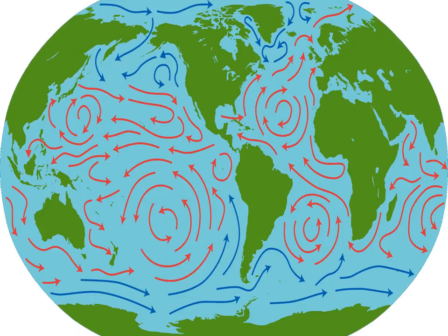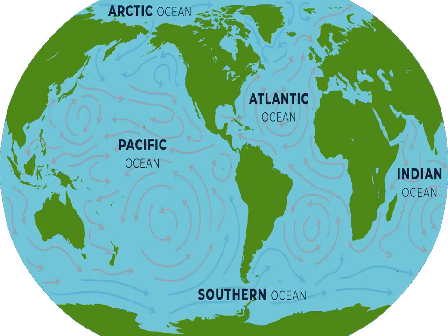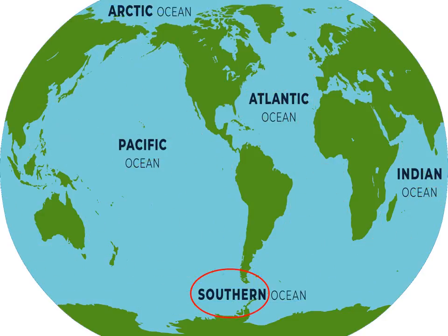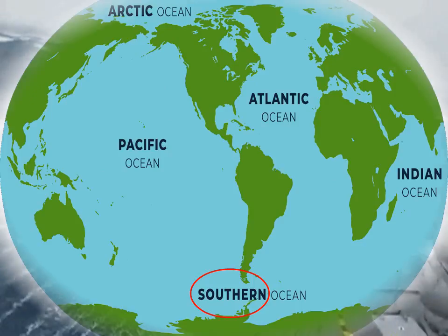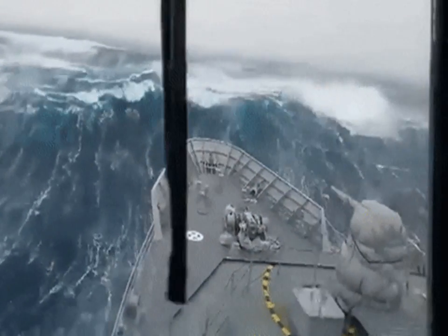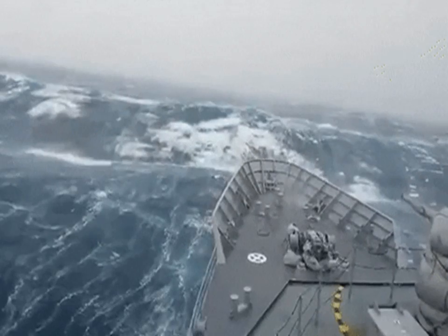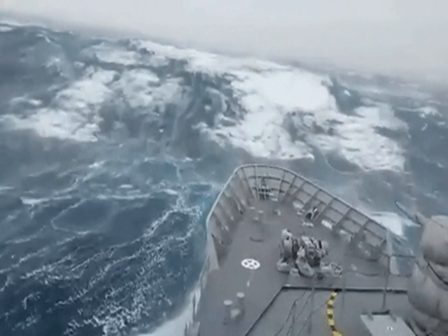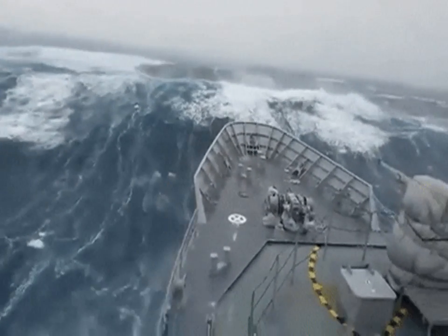Next comes the Southern Ocean or Antarctic Ocean. The Southern Ocean is the second smallest ocean in the world. The Southern Ocean comprises of the southern portions of the Pacific, Atlantic and Indian Oceans and the seas surrounding Antarctica.